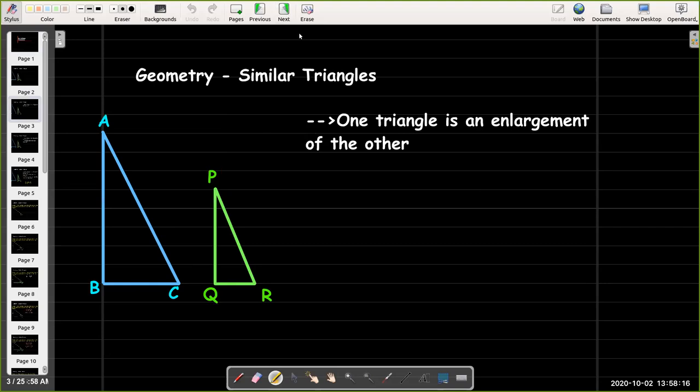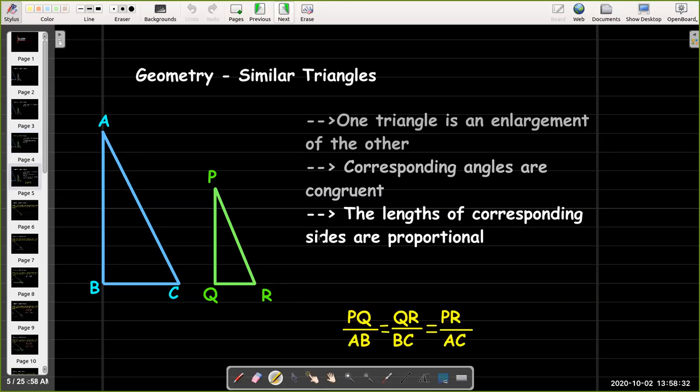First thing we want to look at are similar triangles. Similar triangles mean that one triangle is an enlargement of the other. Your corresponding angles are going to be congruent and the thing that we're really going to make use of is that the lengths of corresponding sides are proportional.